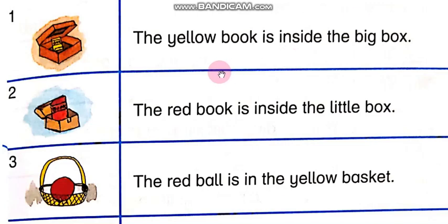Bismillah ar-Rahman ar-Rahim. Assalamualaikum dear students. We are going to study New Active English Book 2, Unit number 11, Adjectives, page number 45. Dear students, first picture: there is a big box, and in it, yellow color.